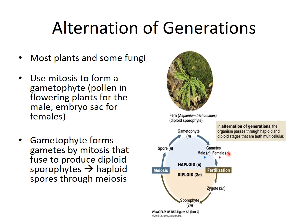With alternation of generations, about half the life is haploid and half diploid. The gametophyte — notice the root 'gamete' — is on the haploid side of the life cycle. On the diploid side, we see the sporophyte. Organisms with this life cycle split time between haploid and diploid stages — gametophytes when haploid, sporophytes when diploid.